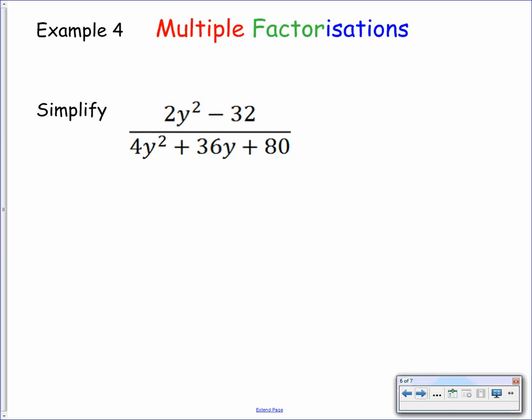On to example number four — here we need to look at multiple factorization. Go through the process of identifying a common factor, a difference of two squares, and a trinomial if necessary. Take each term individually and factorize. Looking at the numerator we have 2y squared minus 32. There's clearly a common factor of 2, so taking that out we get 2 bracket y squared minus 16. That y squared minus 16 is actually a difference of two squares, so we need to factorize this again.